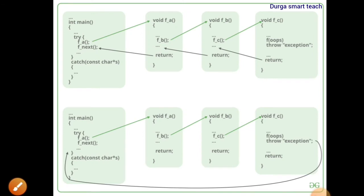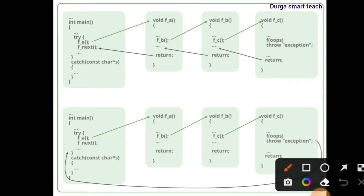Here is an example. First, int main calls fa. So we are calling the fa function, but we are not passing any parameters. Whenever you call that, control passes to the fa function. After that, fb — so again we are calling the fb function, and in the fb function you are calling the fc function.